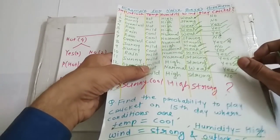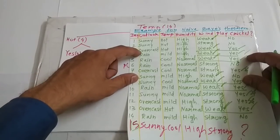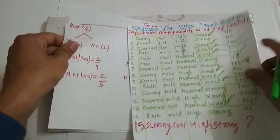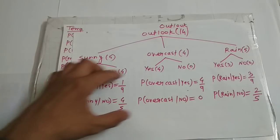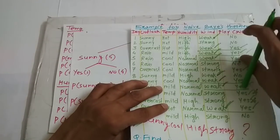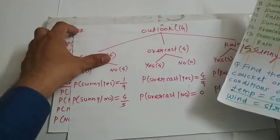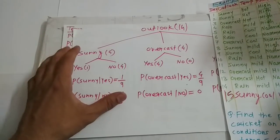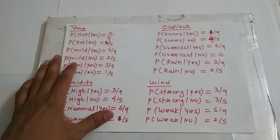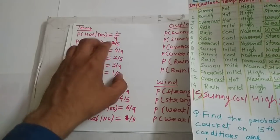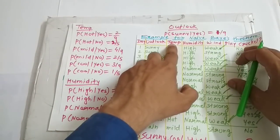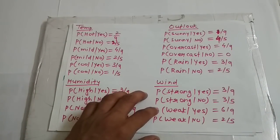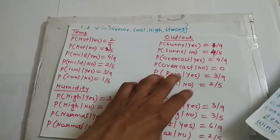After temperature, the next attribute is outlook. For outlook also we have three varieties of values: sunny, overcast, and rain. If we do the same step for outlook, we get an expansion with sunny, overcast, and rain — each divided into yes and no — with corresponding probabilities. So ultimately we have expanded the wind column, humidity column, temperature column, and outlook column, and found all the probability values. I have written all those probability values on one page so it will be easy to do further calculations.